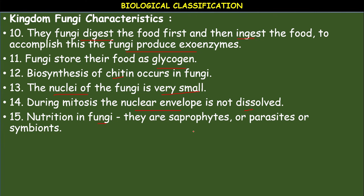The nutrition in fungi: they are saprophytes, parasites, or symbionts. Saprophytes depend on dead and decomposing organisms; parasites live in host plants or animals. Symbionts associate with other organisms — for example, lichens are fungi associated with algae, and mycorrhiza are fungi that associate with the roots of higher plants.